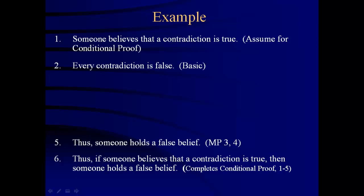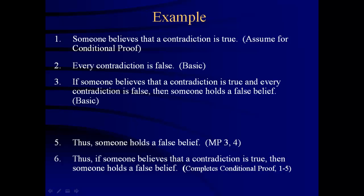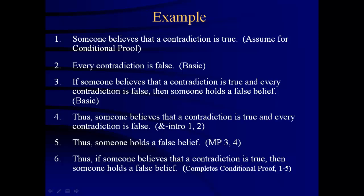Let's see. Here we'll introduce just a truth. It seems necessarily true—in fact, it is necessarily true: every contradiction is false. Here's another basic claim. It is a conditional itself. If someone believes a contradiction is true and every contradiction is false, then someone holds a false belief. A nice example for the candidate here that holds the false belief would be this person, although you're not committed to that in this claim. Nonetheless, the claim is true.